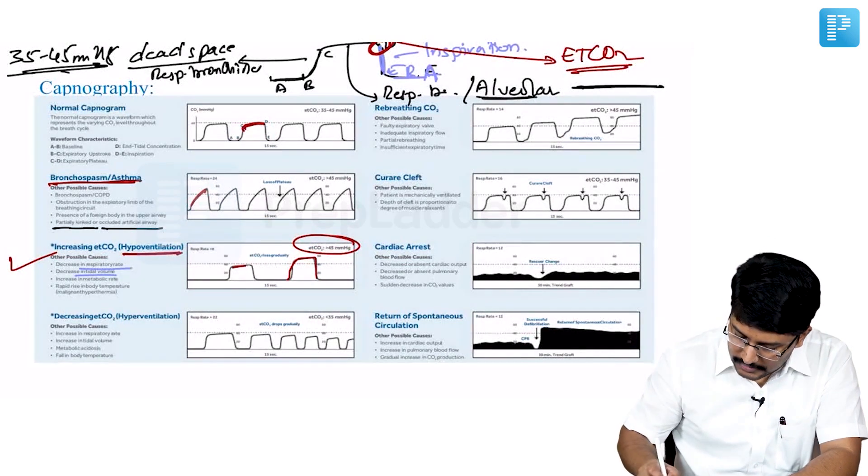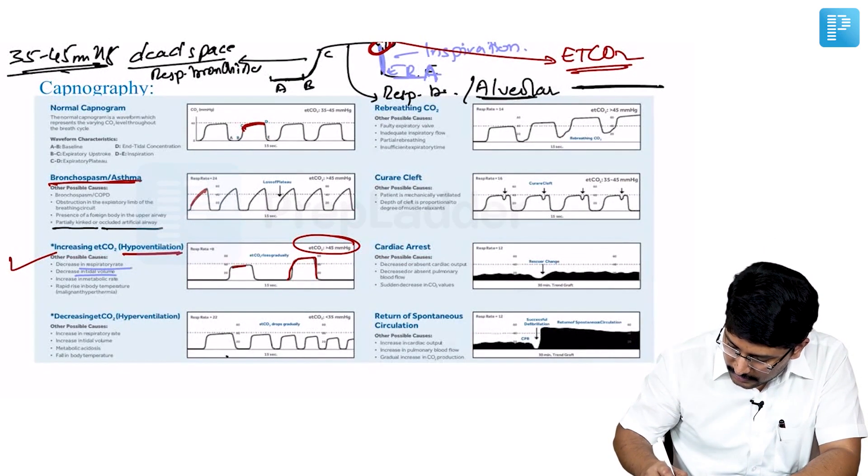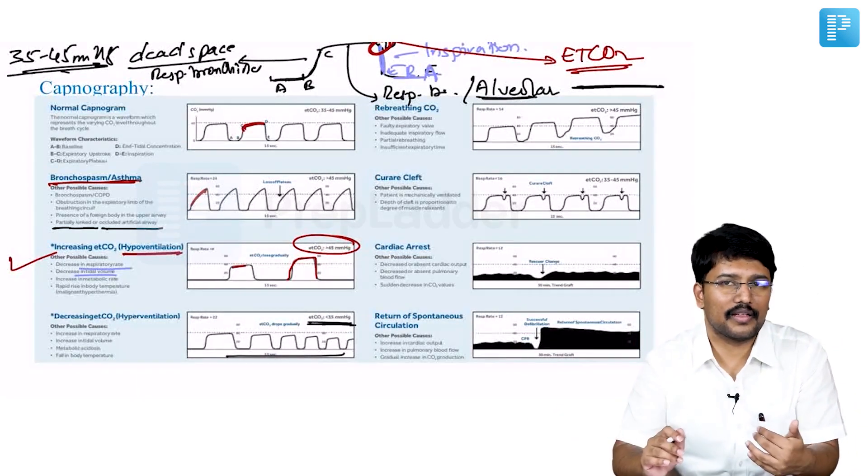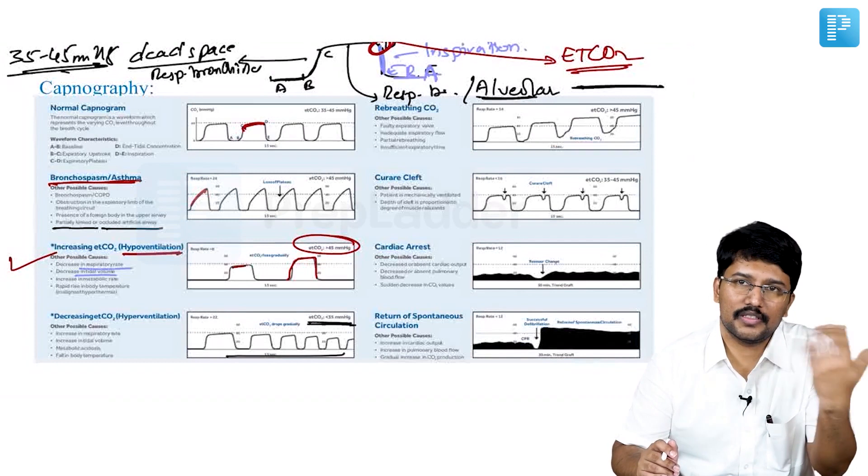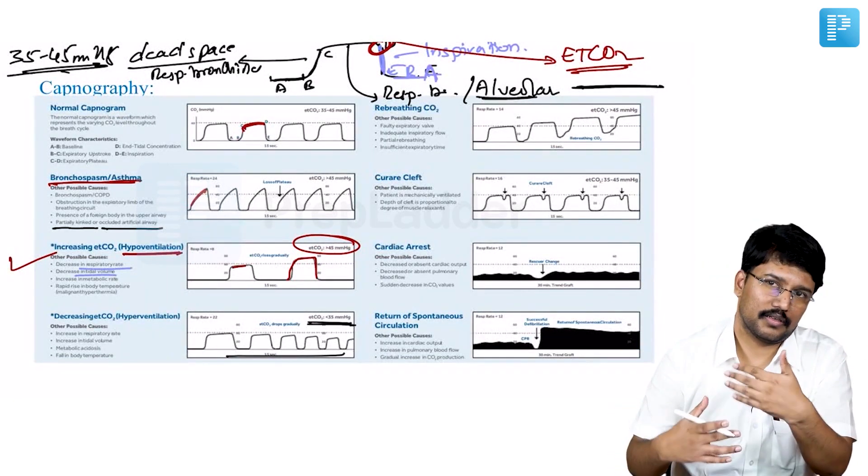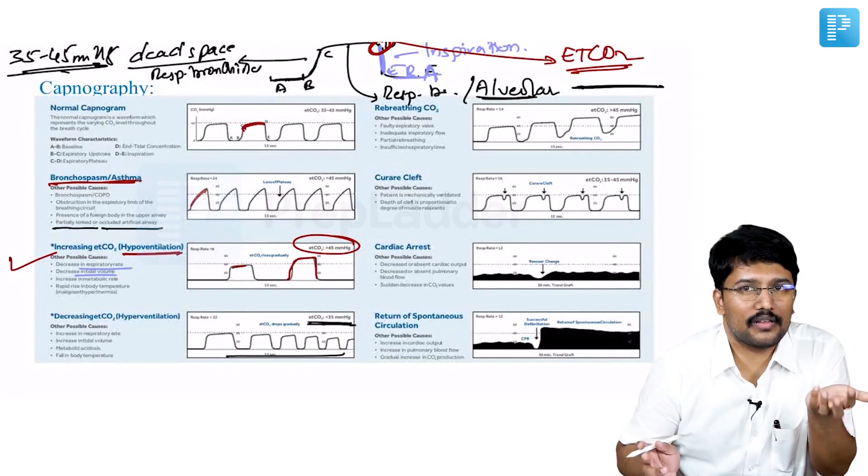Now if you notice with every breath your ETCO2 is decreasing, it is below 35 and it is decreasing. That means probably the patient is hyperventilating or on your ventilator setting, you have set a respirator rate which is higher than required.